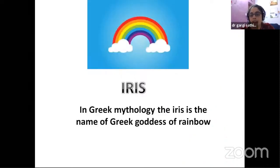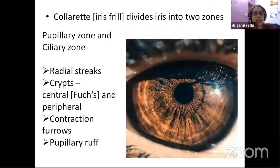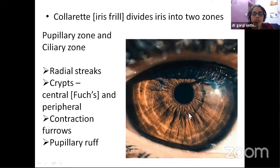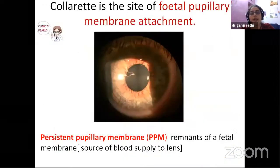You might be knowing it from your MBBS times. Now coming to the beautiful iris. In your undergraduate and postgraduate presentations, you will always be telling about iris pattern. There is a colaret here which divides the iris into a pupillary zone and a ciliary zone. You can see there is a pigment ruff there — the pupillary ruff — which is actually the posterior iris pigment epithelium peeping out. Then you have the radial streaks, small crypts both centrally and peripherally, and these contraction furrows. This is the iris pattern you mention about. Next time under slit lamp, look for these — they are altered in conditions like uveitis.